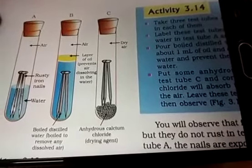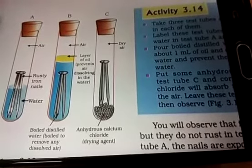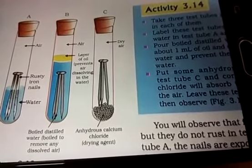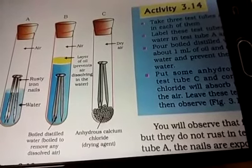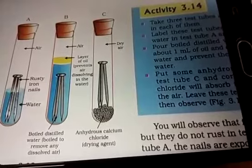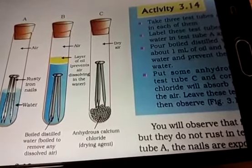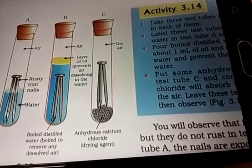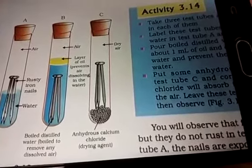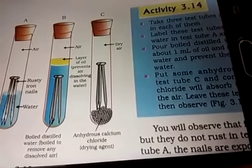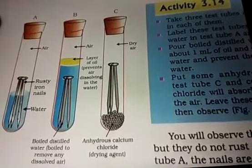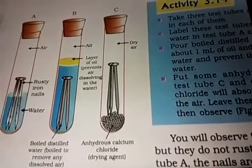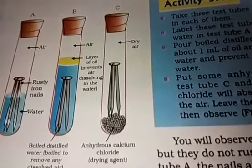In figure 3.3, there are three test tubes, all containing iron nails. The first has water and nails. The second has nails and water with an oil layer on top. The third has only anhydrous calcium chloride and nails — calcium chloride dries the air by removing moisture. The first test tube nails will get rusted, but in the second and third, the nails will not rust because there is no contact with air.